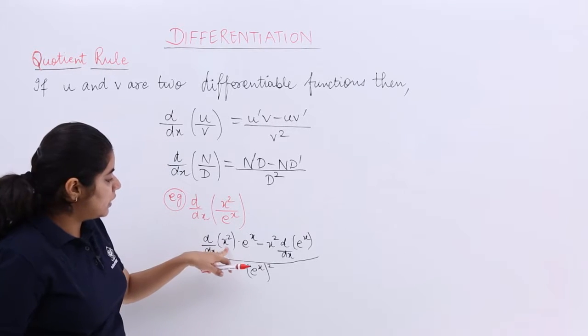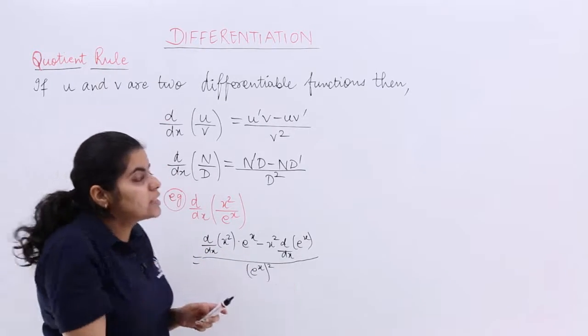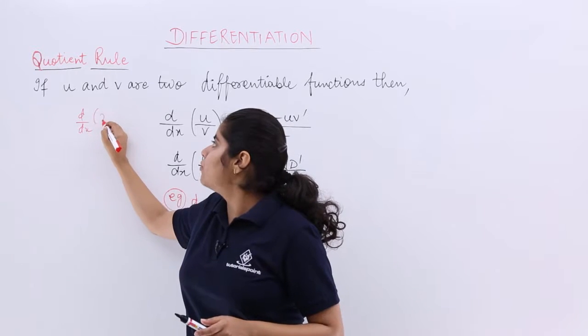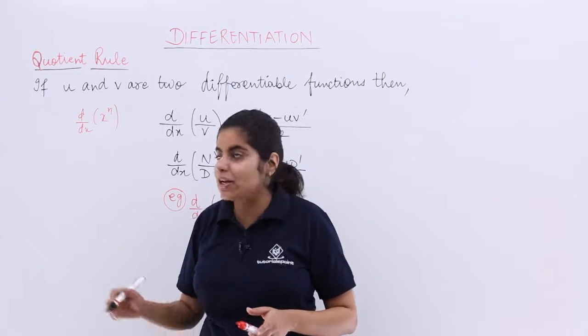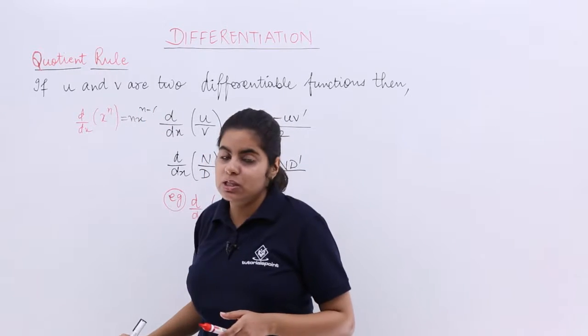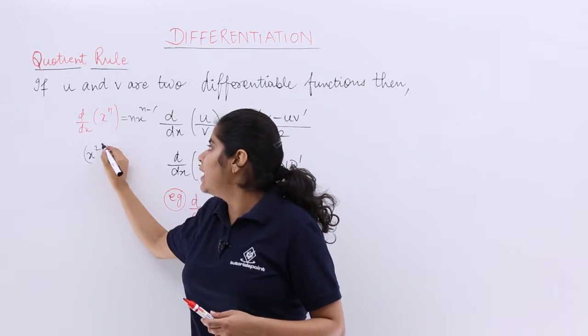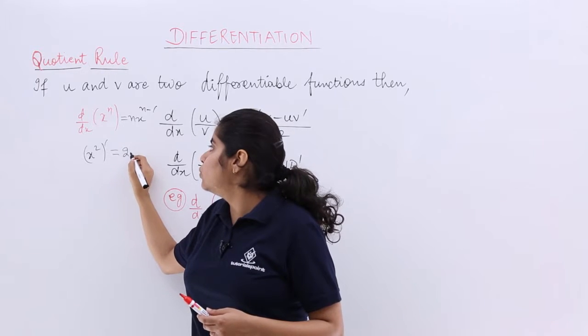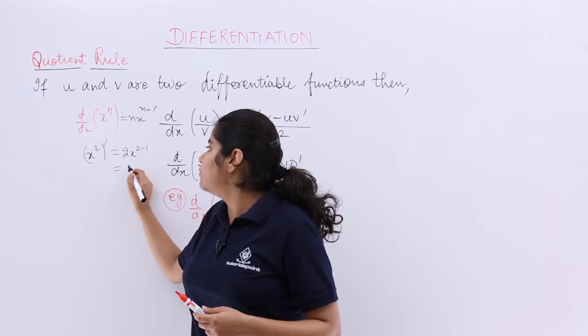Now we have x square. Now we have x square differentiation. You know the formula of differentiation of x raised to the power n: d by dx of x raised to the power n, this we already started, it is nx raised to the power n minus 1. By the same formula, if I tell you to differentiate x square, that means it will be nothing but 2x, nx raised to the power 2 minus 1, which is 2x.